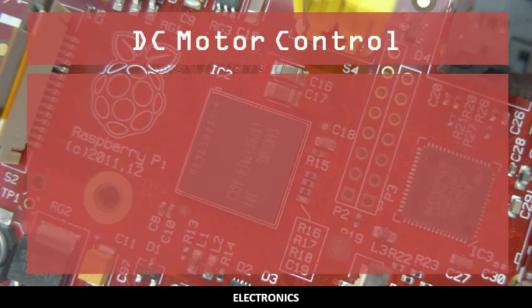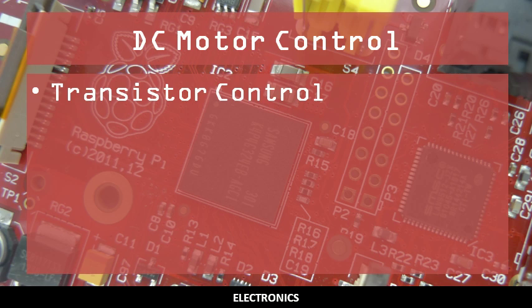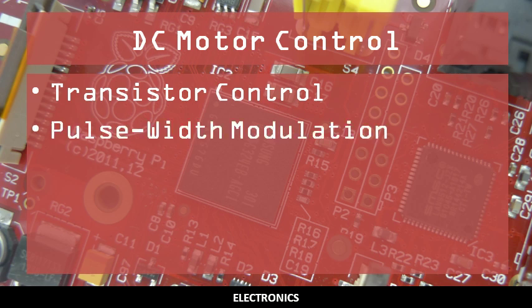In this video, we'll use the Raspberry Pi to control a DC motor. You should already know how to control components using an NPN transistor, be able to use pulse width modulation to change the brightness of an LED, and be familiar with the function of diodes.